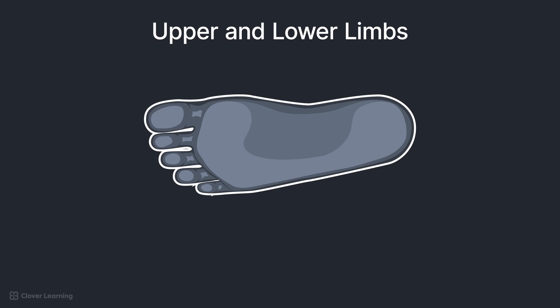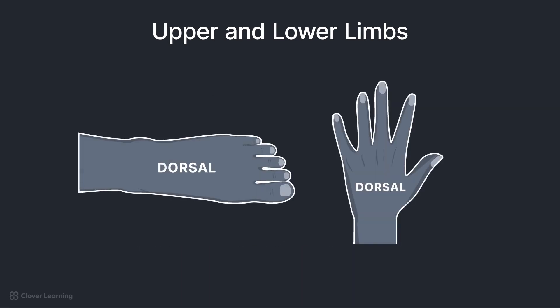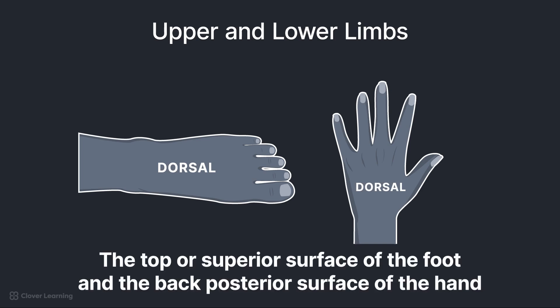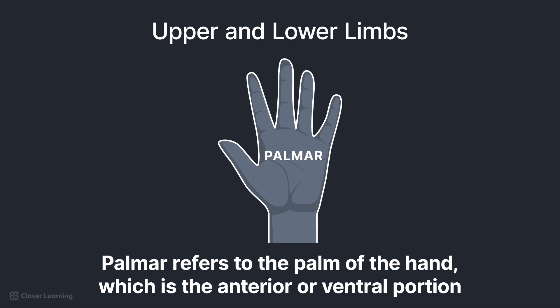There are additional terms that are specific to the upper and lower limbs. Plantar refers to the sole or inferior surface of the foot. When you plant your foot, the plantar portion touches the ground. Dorsal, when used in relationship to the feet and hands, refers to the top or superior surface of the foot, or dorsum pedis, and the back or posterior surface of the hand, or dorsum manus. If you go back to our example about the shark and dolphin, the dorsal fin on its back is on the top of the water when it swims, and the dorsal surface of the foot is the top of the foot. Palmer refers to the palm of the hand, which is the anterior or ventral portion when in anatomic position.